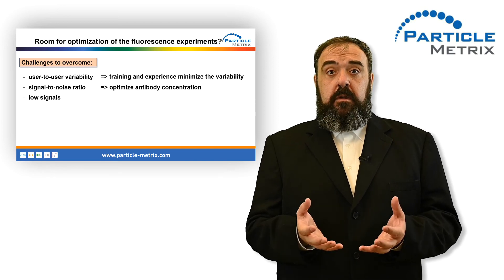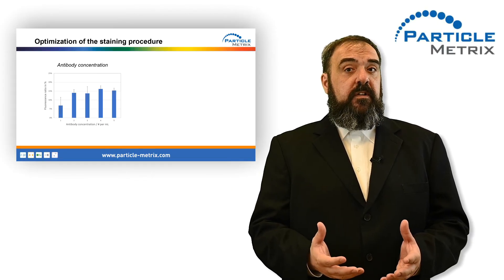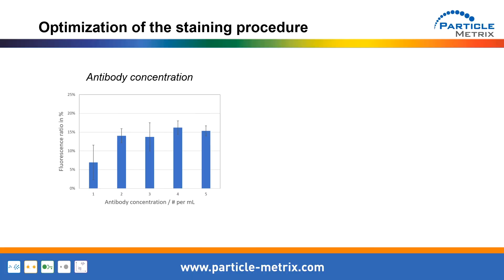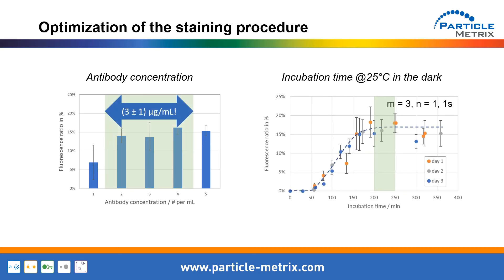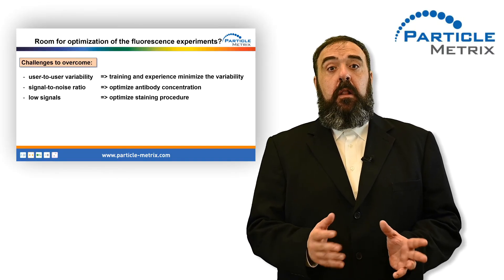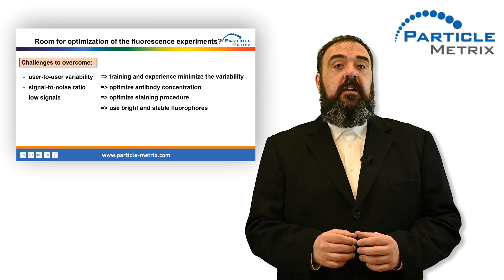Challenge number 3: low signals in general. In contrast to cells, the surface of extracellular vesicles is very small. The number of binding sites is rather limited, meaning that only a small number of fluorophores will be present on a particle. The easiest way to deal with this challenge is optimization of the staining procedure. This does not only refer to the adaptation of the antibody-to-vesicle ratio, but also the general antibody concentration, incubation time, and incubation temperature. Dealing with low signals requires a lot of adaptation. However, the use of bright and stable fluorophores strongly affects the quality of the data.